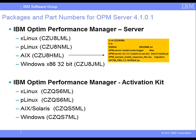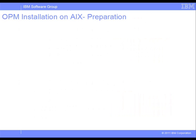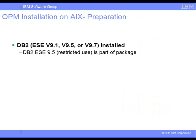There are a few things that need to be prepared for installation on AIX. First, we should have DB2 installed on the machine before this installation because a repository database needs to be created in DB2 during the installation. If the server already has DB2 ESE 9.1 or later, we can use it. Otherwise, we can use the Restricted Use License of DB2 Enterprise Server Edition version 9.5 that is included with OPM.